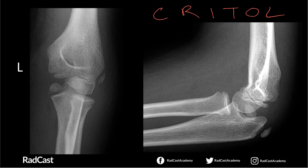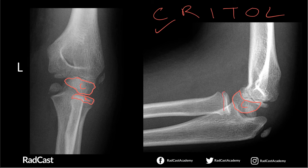Let's start by looking for the capitellum — C. Here it is on the frontal view, and on the lateral view you've got the ossification centre right here. Capitellum, tick. Next should be the radial head. Looking for the radial head on the frontal view — there it is. And on the lateral view, the radial head is also there. Tick.